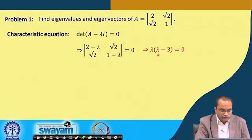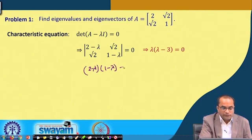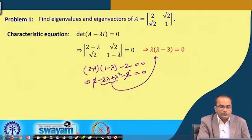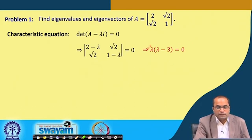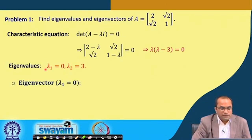That simplifies to give exactly minus 2. So we have (2−λ)(1−λ) − 2. Expanding: 2 − 2λ − λ + λ² − 2 = λ² − 3λ. The 2s cancel and we get exactly the characteristic equation λ(λ−3) = 0. This tells us there are two eigenvalues: λ = 0 and λ = 3.